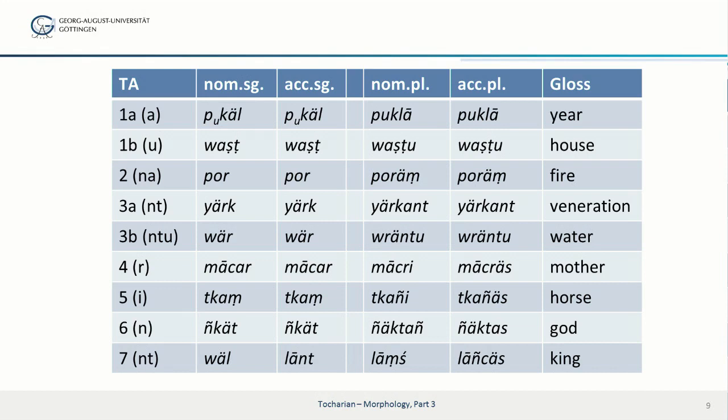Then the na-class is represented by por, plural poriṃ, 'fire', actually related to our word for fire in the Germanic languages.